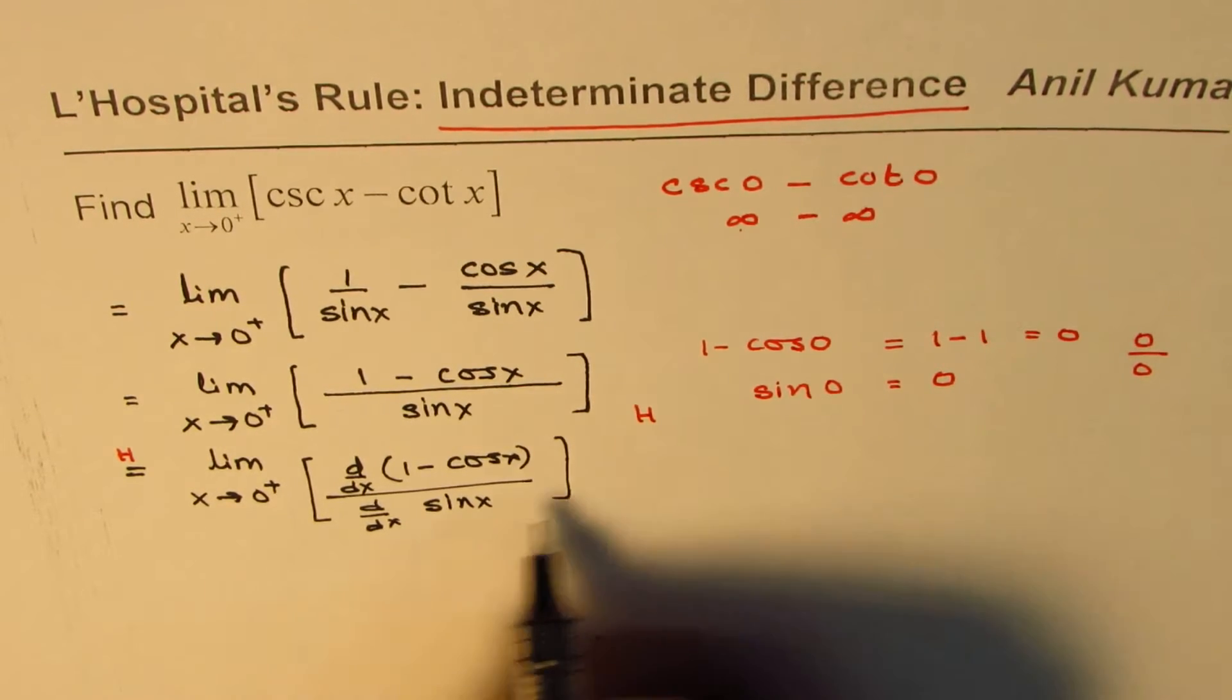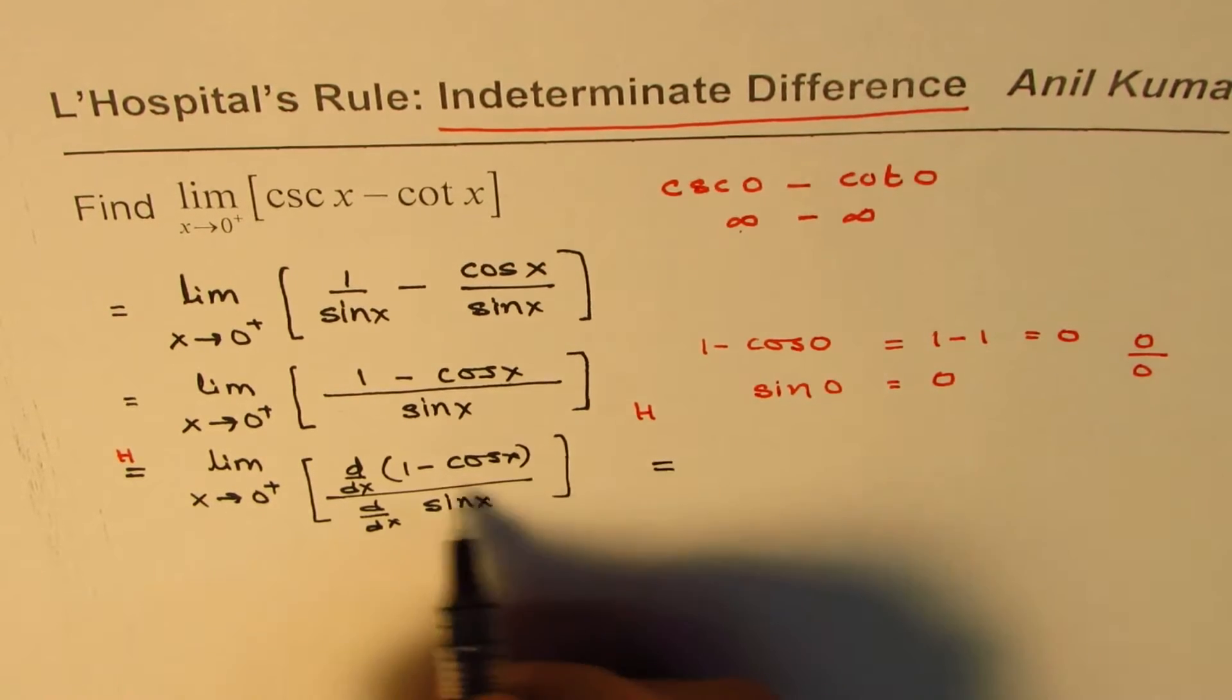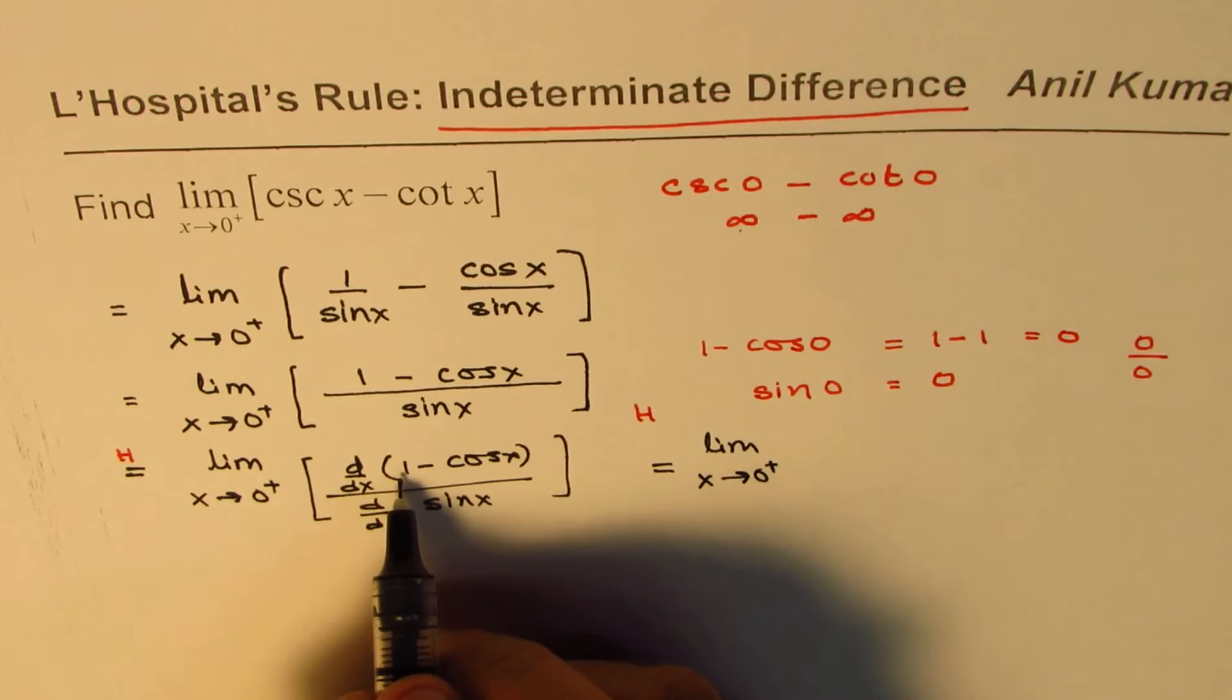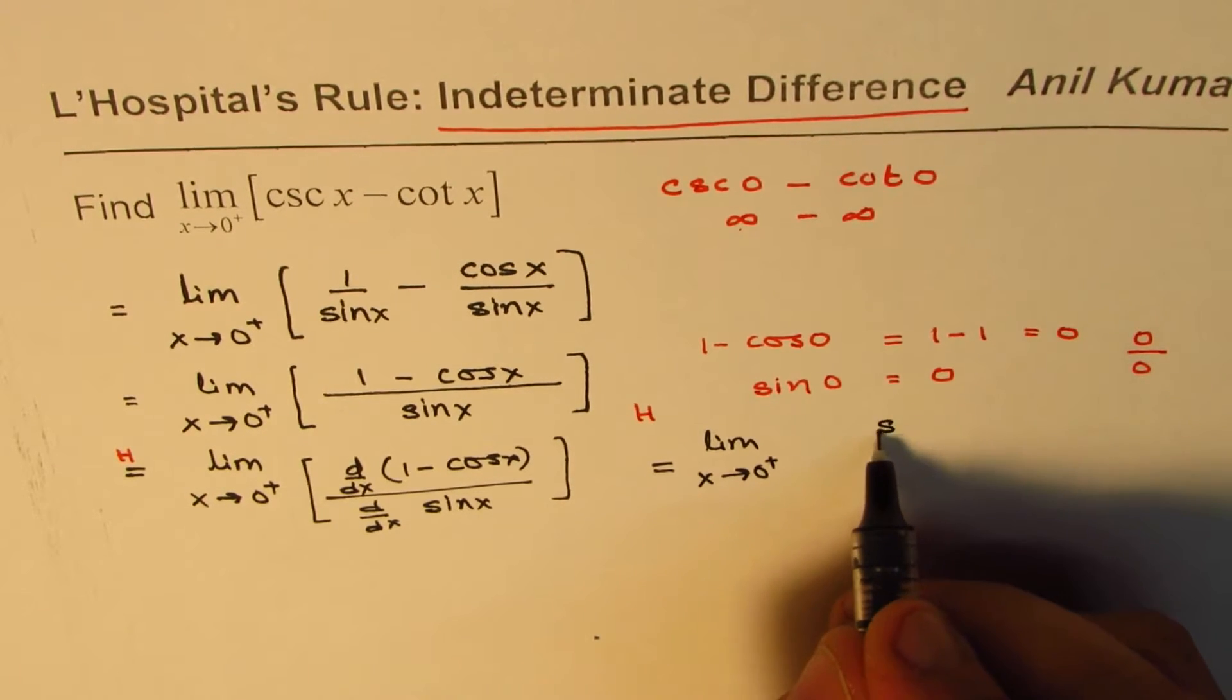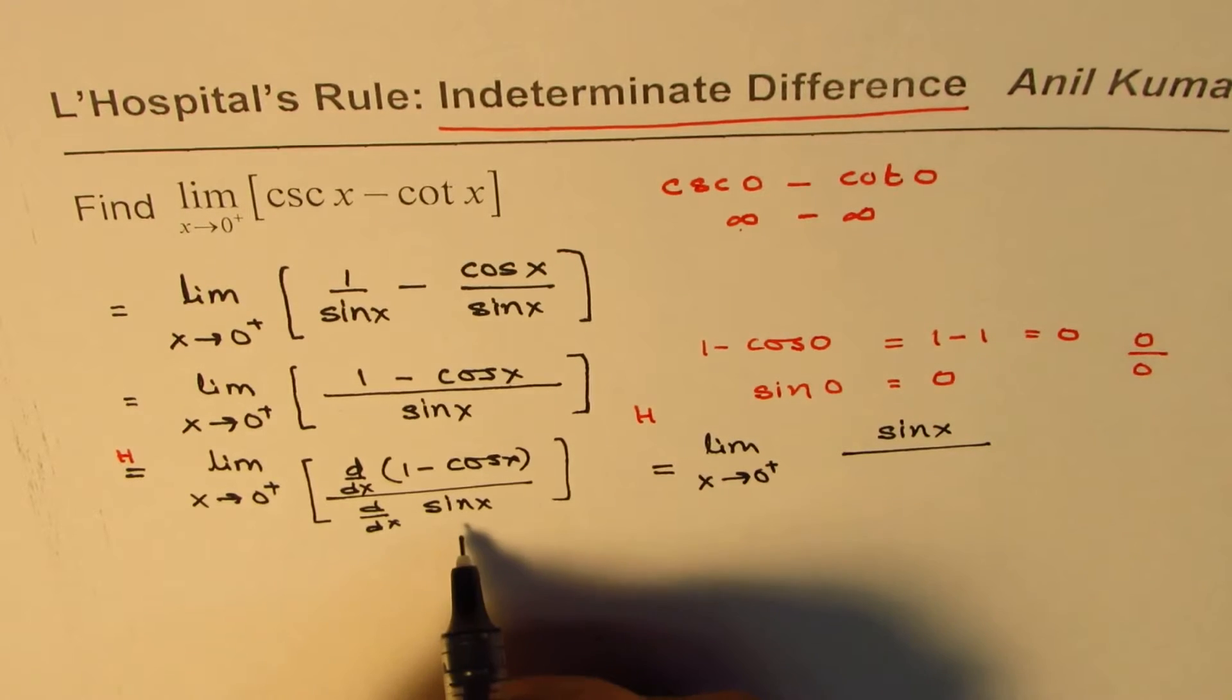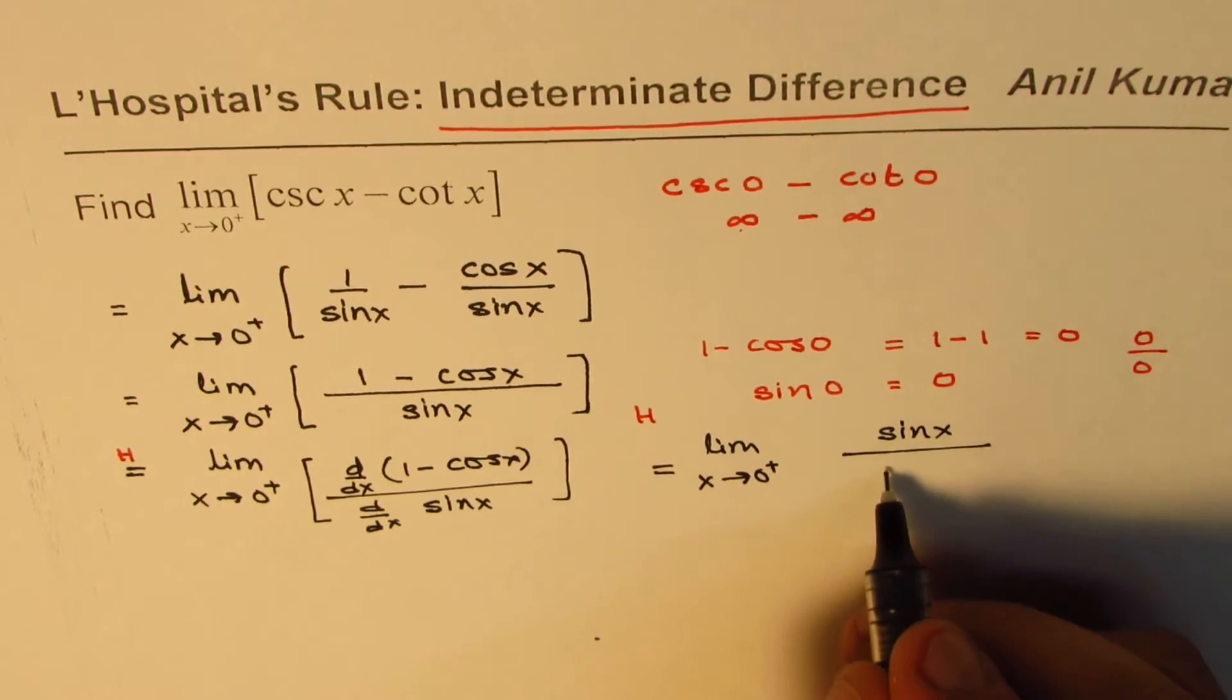Now, derivative of numerator is limit x approaches 0 plus. 1 is 0, for cos x is minus sin x. So we get plus sin x in the numerator. As far as the denominator is concerned, sin x derivative is cosine x. So we get cos x.